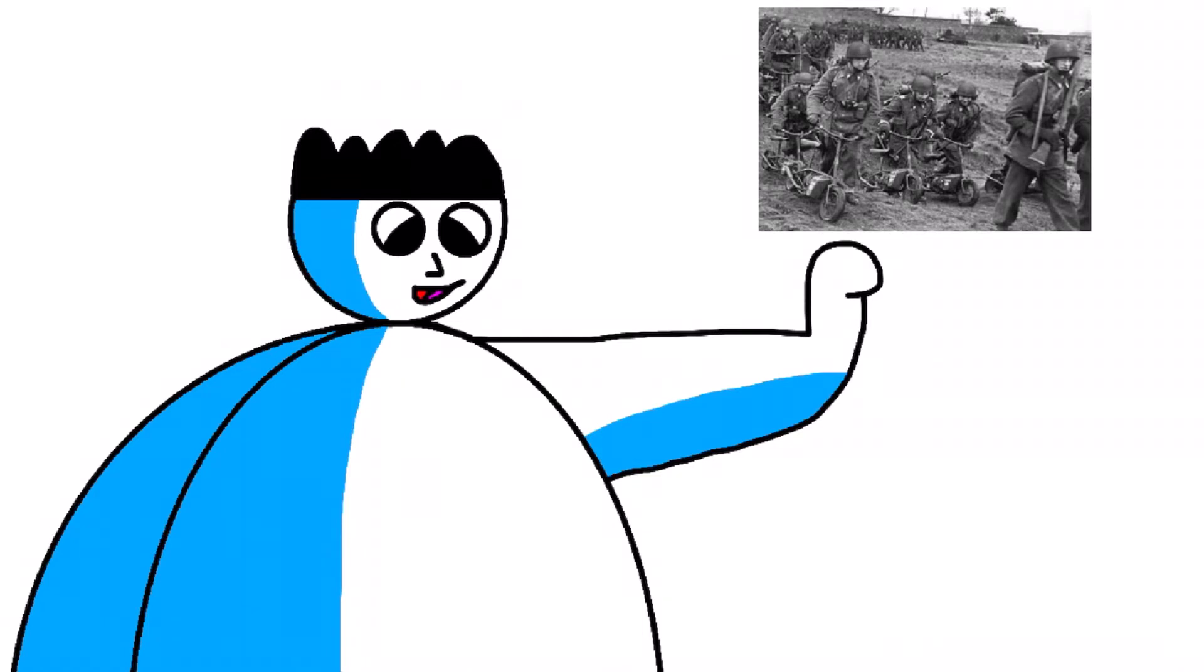During World War 2, there used to be these things called weld bikes. Weld bikes are basically just like a miniature bike. You could fit them inside air tanks and could also take them when you're jumping out of a plane.